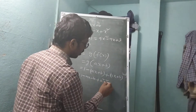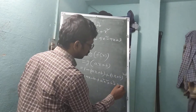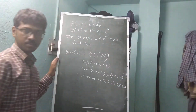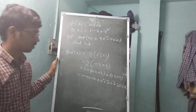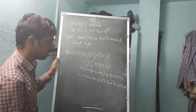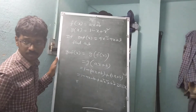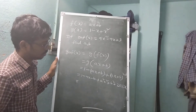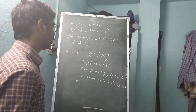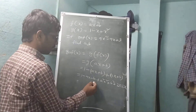Expanding: a squared x squared plus b squared plus 2 times ax times b. Using the a plus b whole square formula. This simplifies to the computed value of g circle f of x.